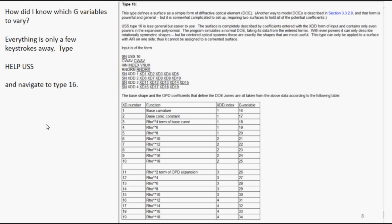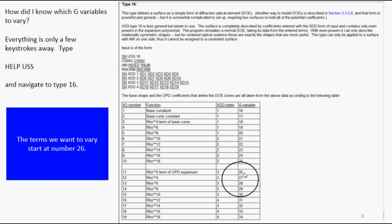Now, how did I know which G variables to vary? Well, if you type help USS and look at type 16, you'll see it's got all kinds of aspheric terms. Some of them apply to the substrate, which we're not going to use here. We're just going to look at these terms which apply to the OPD expansion. And we're going to look at terms which start at G number 26.